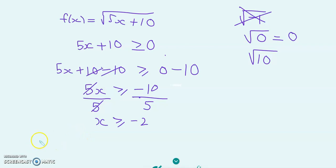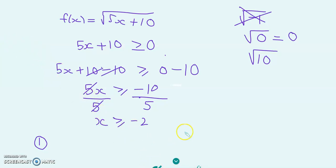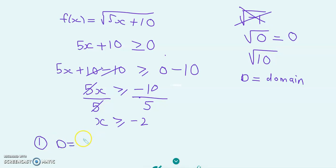So what is the domain? There are two ways to write the domain. The first way — I'm going to let d stand for domain. So d will be the set of all real numbers such that x is bigger than or equal to minus 2. We write it with a curly bracket to signify a set.